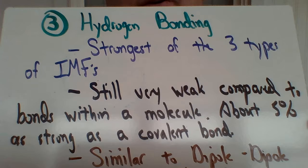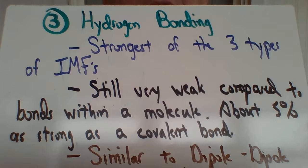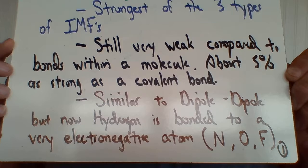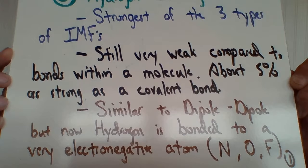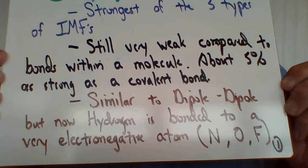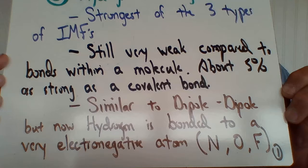A normal covalent bond within a molecule is about 20 times stronger than hydrogen bonding, but hydrogen bonding is pretty strong relative to the other types of intermolecular forces. It's similar to dipole-dipole because these molecules have a permanent positive and negative side. Here, hydrogen is bonded to a very electronegative element — the three elements that can participate in hydrogen bonding are nitrogen, oxygen, and fluorine.